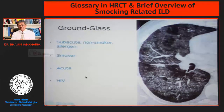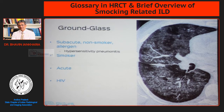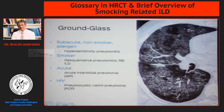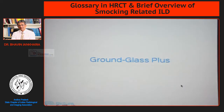There are a bunch of conditions that can occur in patients who have ground glass attenuation. Ground glass is ill-defined increased lung attenuation that does not obscure the vessels, and it has a bunch of conditions that can present with it.